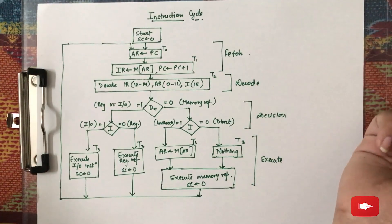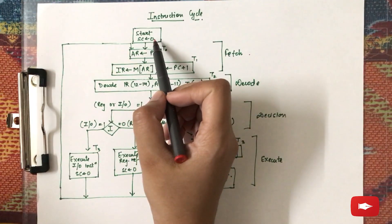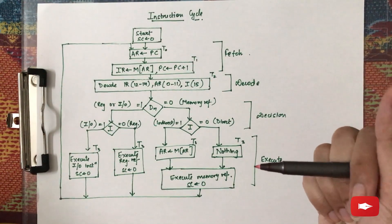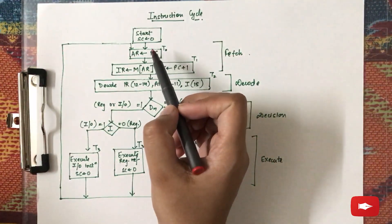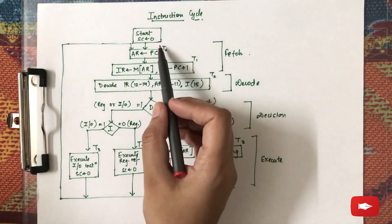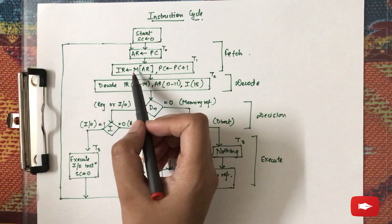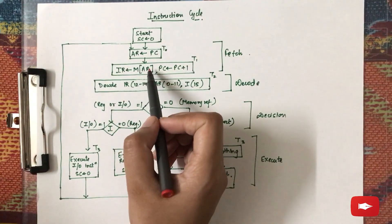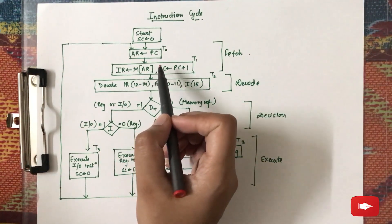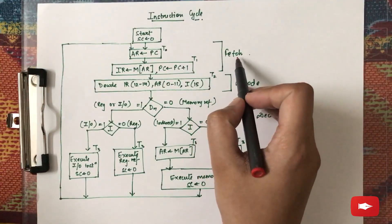In the first phase, the fetch phase, initially the sequence counter is initialized to zero. The first instruction to be executed has its address kept in the PC (program counter), and from there that address is stored in the address register. In the next clock cycle, the instruction from memory denoted by that address register is brought to the instruction register, and the program counter is incremented by one, pointing towards the next instruction to be executed.